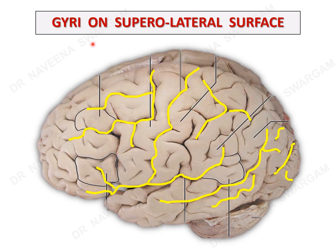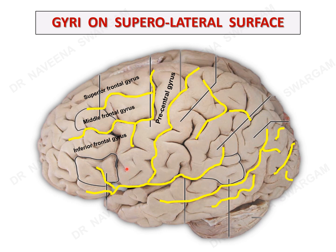Now let's learn the gyri on the superolateral surface. Gyri on the frontal lobe: the pre-central gyrus lies between the central and pre-central sulci. In front of it, the superior and inferior frontal sulci divide the frontal lobe into superior, middle, and inferior frontal gyri. The lower part of the inferior frontal gyrus is further divided into three gyri by the three rami of the lateral sulcus: pars opercularis, pars triangularis, and pars orbitalis, from above downward. The rest of the frontal lobe near the frontal pole is known as the prefrontal cortex.